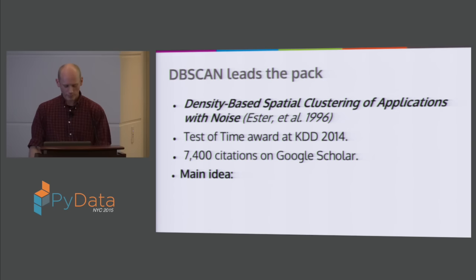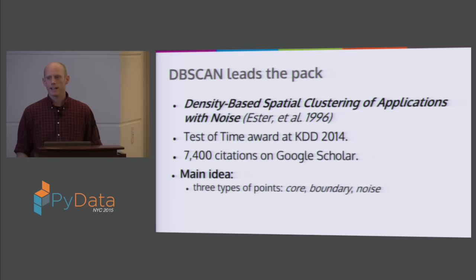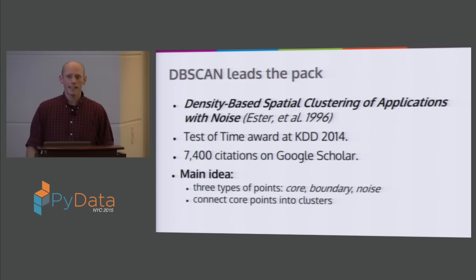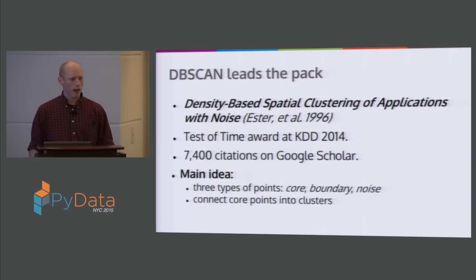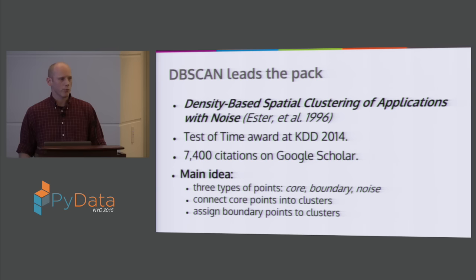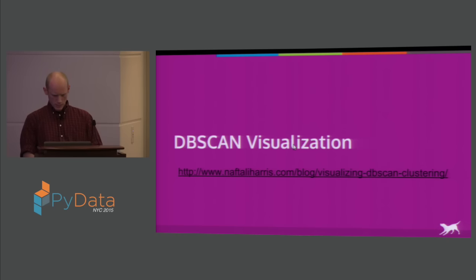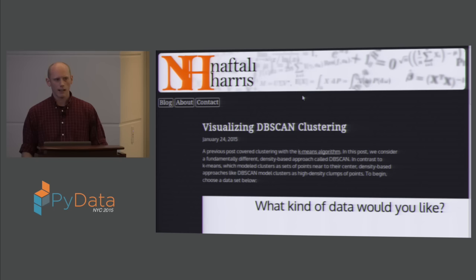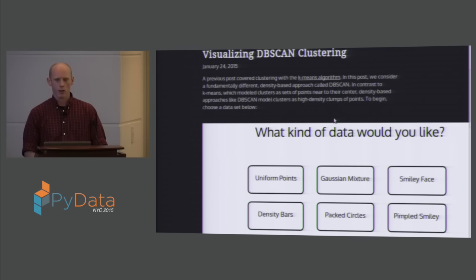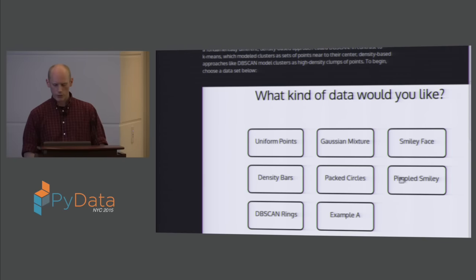The main idea of DBSCAN is that we partition our data into three types of points. Core points are the high-density points at the center of clusters — they have lots of neighbors within a certain distance. The next step is to connect these core points into clusters and assign boundary points to a nearby cluster. Noise points are left as noise. There's a great visualization of how this works in a breadth-first way — we start with an arbitrary point, expand the neighborhood to include other core points, and keep doing this until we run out of nearby core point neighbors.